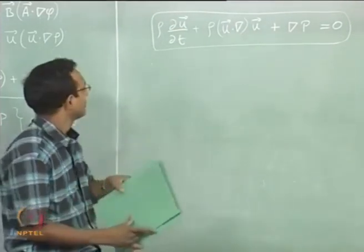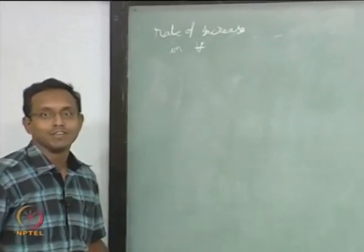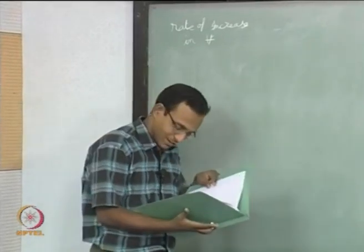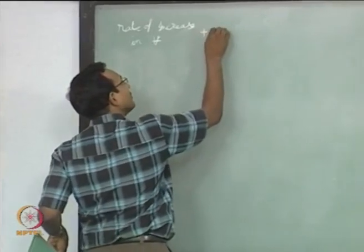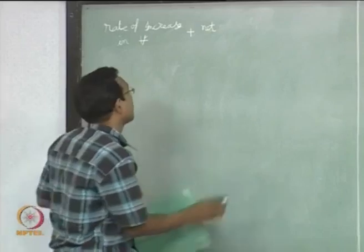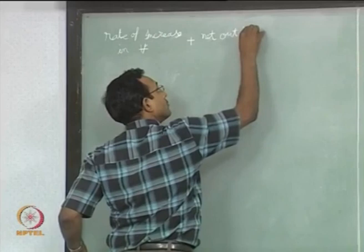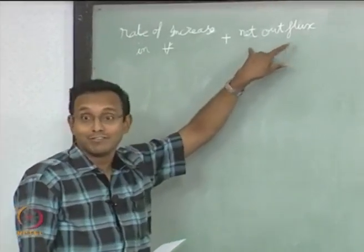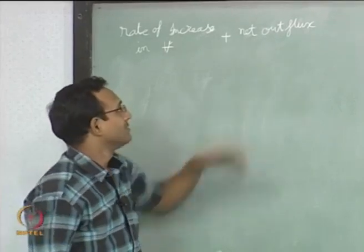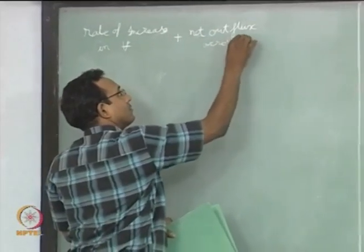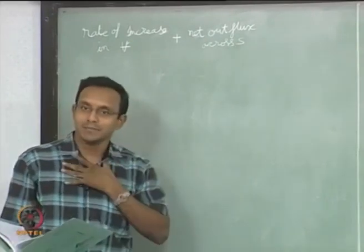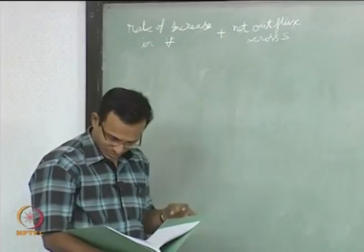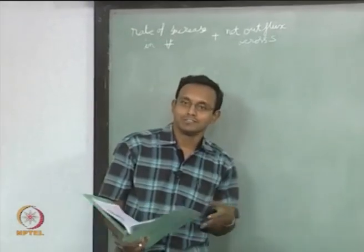So now we will move on to conservation of energy. The rate of increase of energy in volume V — how much is being collected inside my pocket, the accumulation term — is going to be there. Plus the net outflux, which is the net rate of outflux of energy across surface S. And then other forms of work done by me on the surroundings — I will just call it W_out. All this is going out from the system.